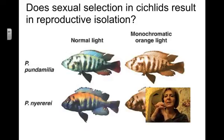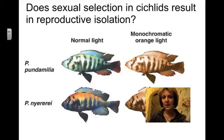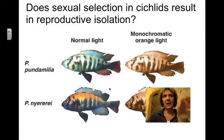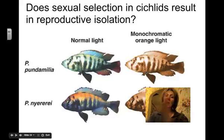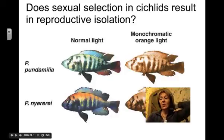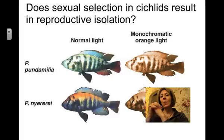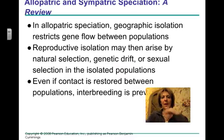Researchers were looking at the question: does sexual selection in cichlids result in reproductive isolation? Normally these two different species of fish have varied color patterns, and under normal light the females would choose the color pattern based on the species. But when the researchers put a monochromatic orange light in the aquarium, the females could not choose their own species because the coloration appeared different, and so they did end up mating with different species fish and producing viable offspring.